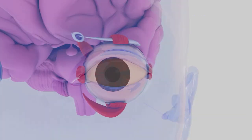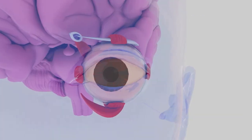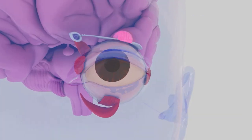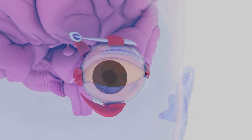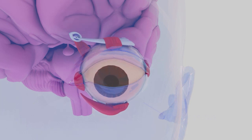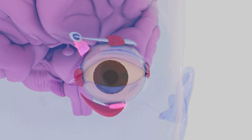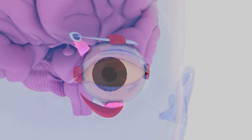When one's eyes are facing straight ahead, the eye is elevated by the superior rectus and inferior oblique muscles together, and depressed by the inferior rectus and superior oblique muscles together. The medial rectus adducts the eye toward the midline.